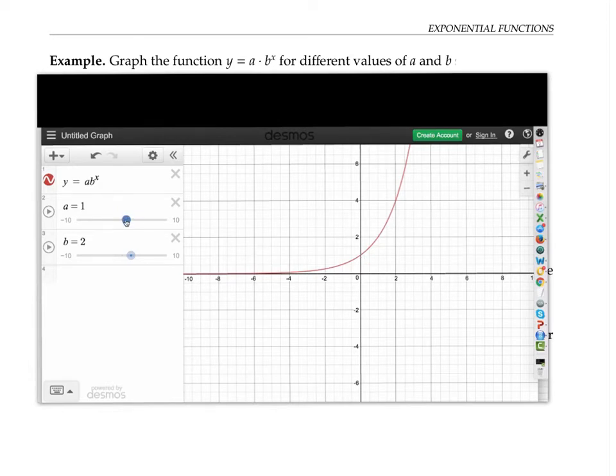If I change my a value, my initial value, the y-intercept changes. The function is stretched out. If I make the value of a go to zero and then negative, then my initial value becomes negative, and my graph flips across the x-axis.